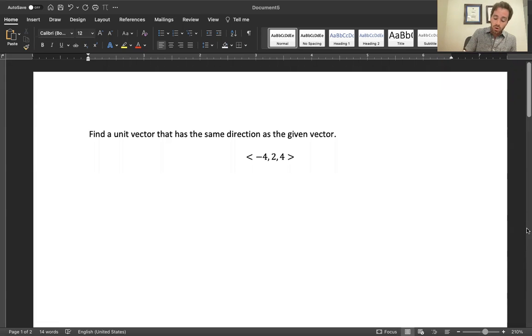The unit vector, if we call this v, the unit vector in v's direction is vector v divided by its own magnitude. So we need to find the magnitude of it first.